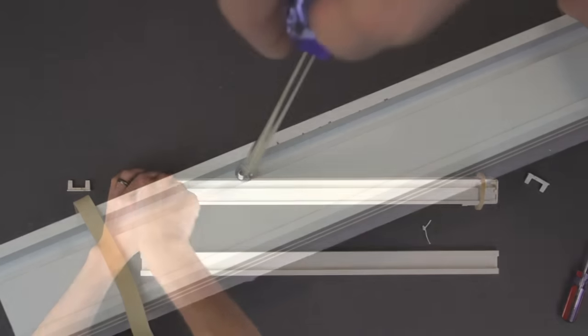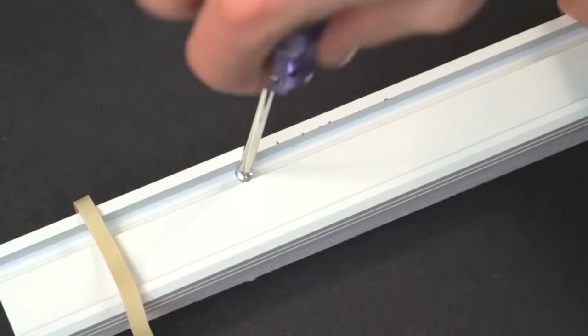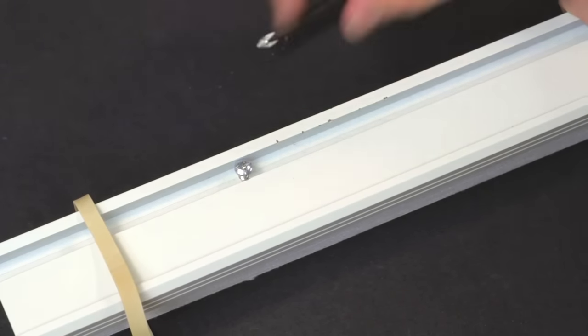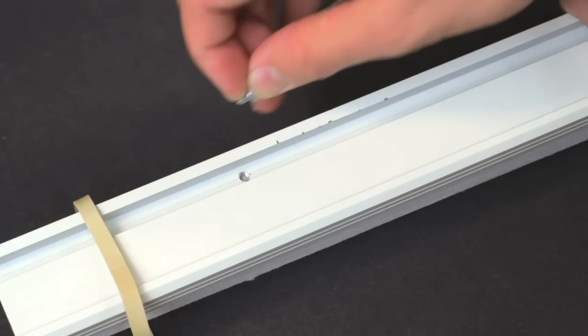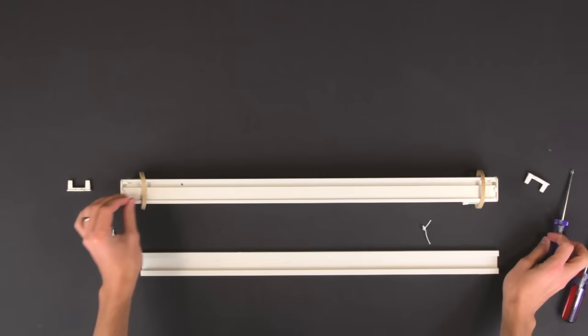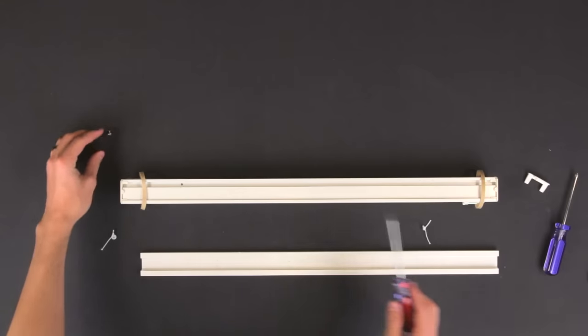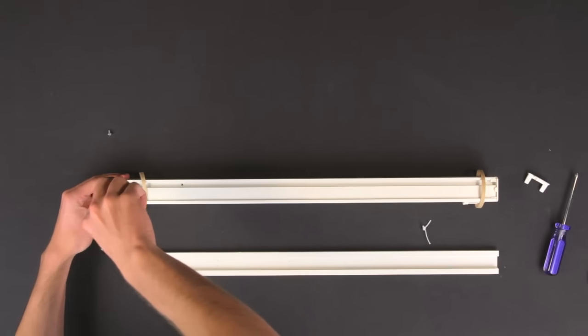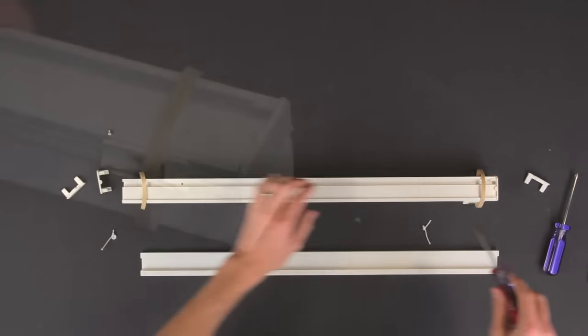Remove all set screws from the top rail. Remove the end caps and slide the top rail off towards the cord lock side as shown.